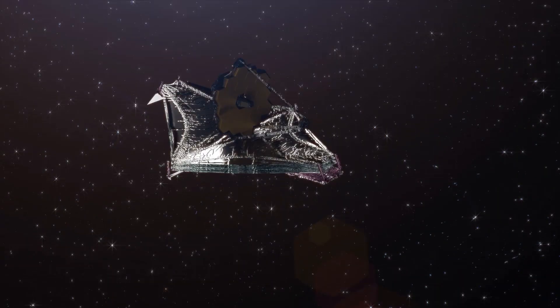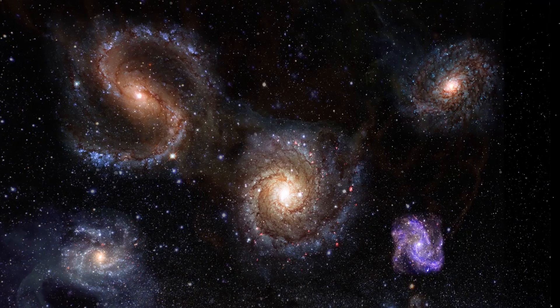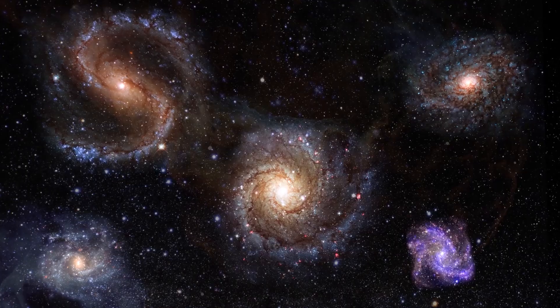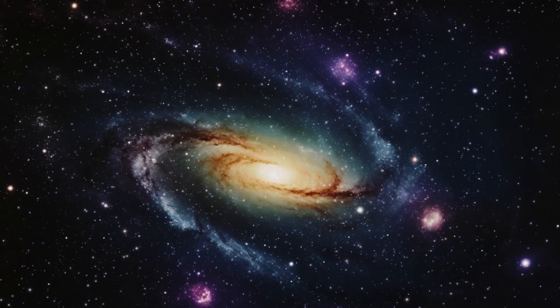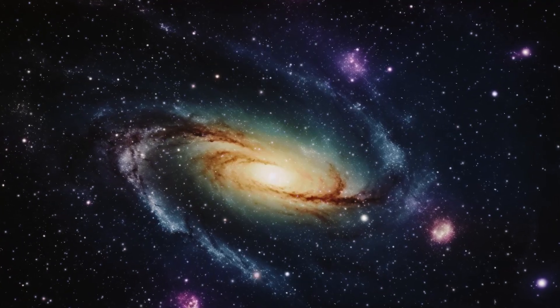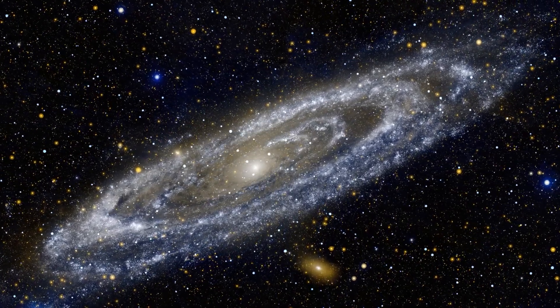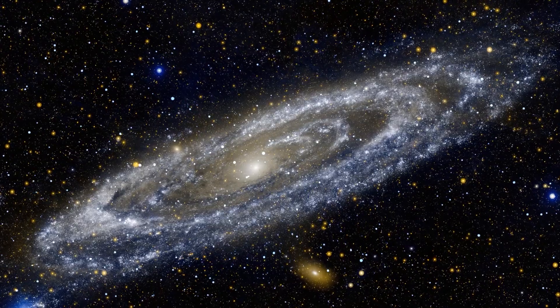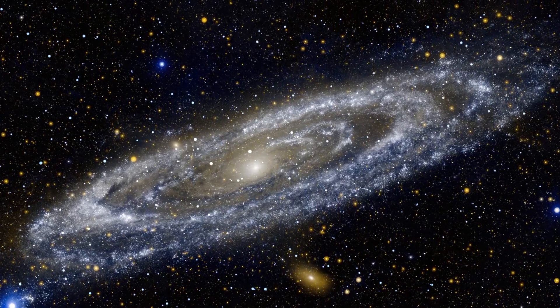But the results of the James Webb Telescope are forcing them to reconsider. According to widely accepted ideas, these early proto-galaxies reached adolescence between one and two billion years into the universe's existence, formed into dwarf galaxies.